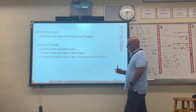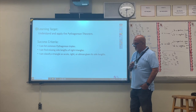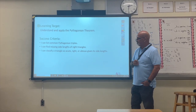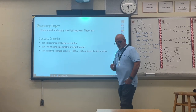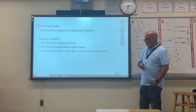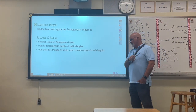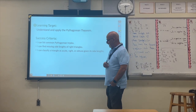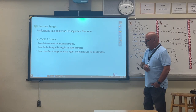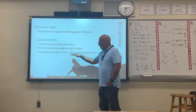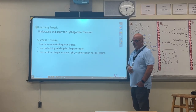By the end of this lesson you're going to be able to list common Pythagorean triples. You're going to find the missing side lengths of right triangles, applying the Pythagorean theorem to get a missing side — that can be the hypotenuse or either of the other two sides, which we call the legs. At the end, we're going to see how to use the Pythagorean theorem to classify triangles as right, obtuse, and acute.